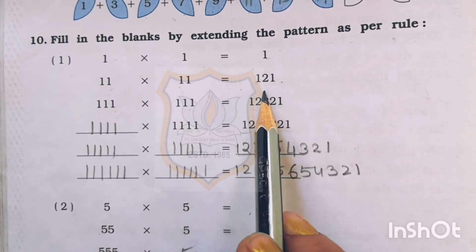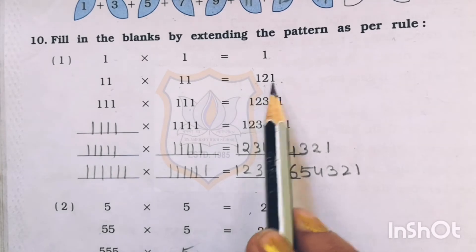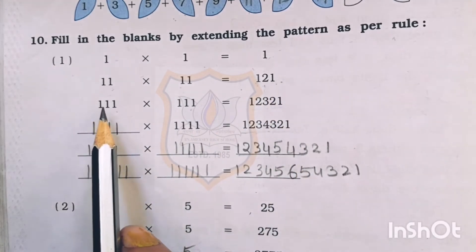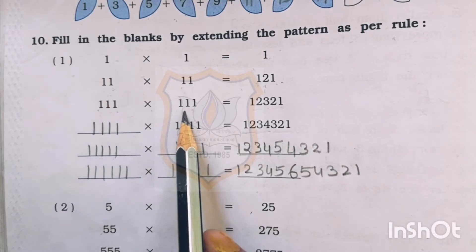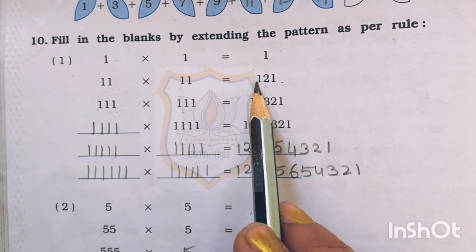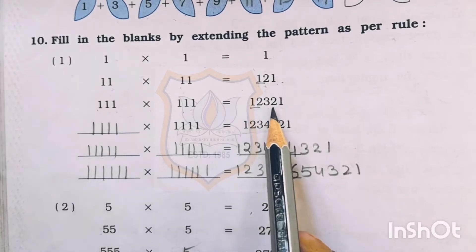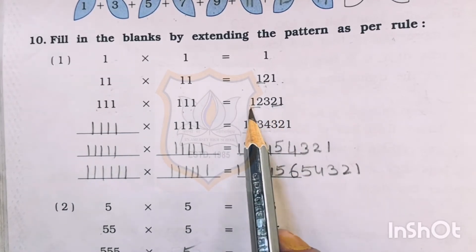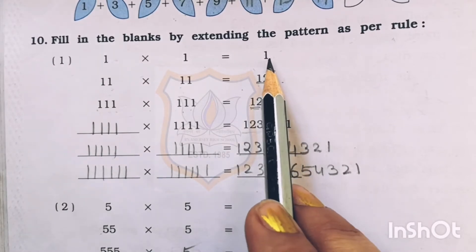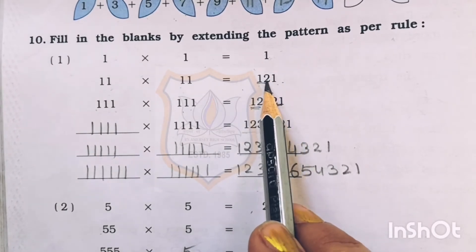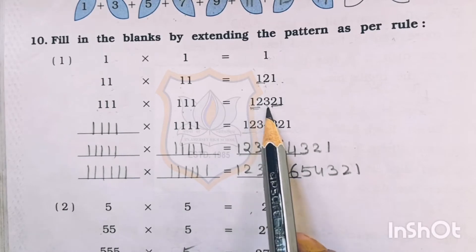And now in the place of 1 we have written 2, so the answer is 1, 2, 1. Then 3 times 1 we have to take: 111 multiplied by 111. Again, we write 1, 2 on both sides and reverse the order as 2, 1. Here 1, 2 we will write, and in reverse order 2, 1. And in place of 2 we will write 3 in the middle. So the answer is 1, 2, 3, 2, 1.